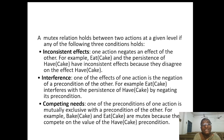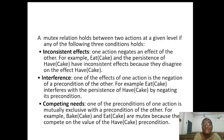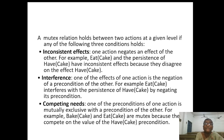Now we look at three mutex conditions. The first is inconsistent effects, the second is interference, and the third is competing needs. For inconsistent effects, one action negates an effect of the other. For example, eat-cake and the persistence of have-cake have inconsistent effects — if eat-cake is done, have-cake will not hold, meaning one action is negating the effect of the other.